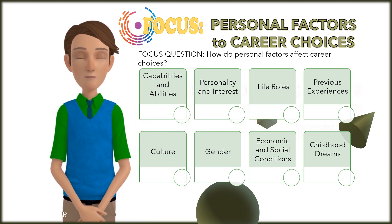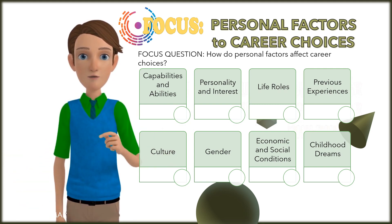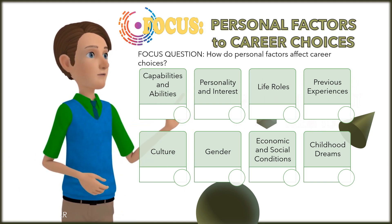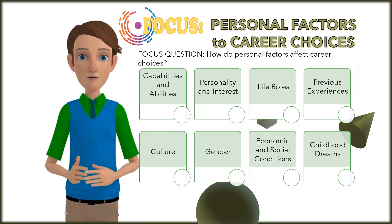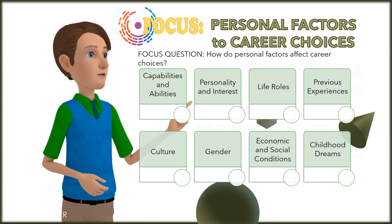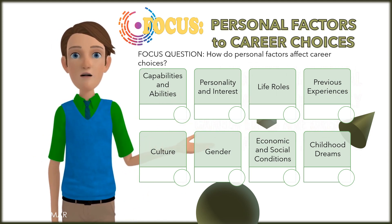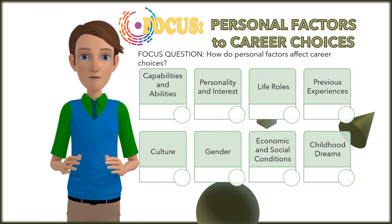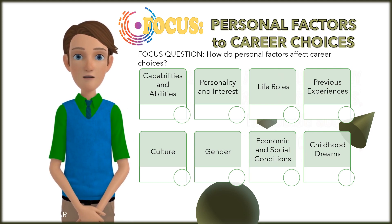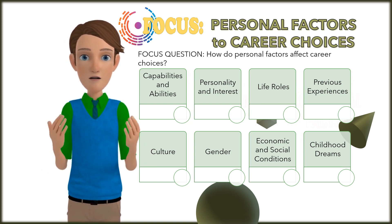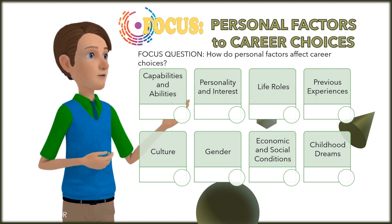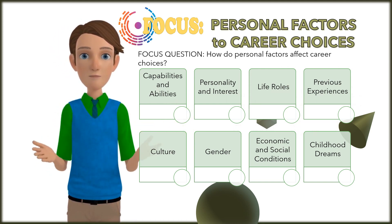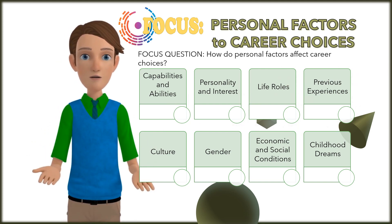Eighth, childhood dreams. What do you want to do when you grow up? This question may have influenced how you thought about occupations in childhood and how you think about them today. Ginsberg presented a theory explaining three professional development-related life phases — the first, called Fantasy, begins as early as age 11. Career decisions are not decided based on one criterion alone; choices are influenced by a variety of social, cultural, and environmental factors. Things might change as a result of your learning experience and external circumstances, so you will continue to fine-tune and adjust your job choices.